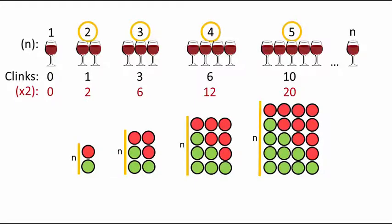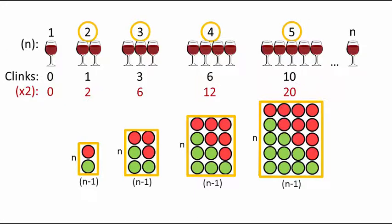We can also see that the width of each rectangle is always one less than the term number, so we can label this n minus 1.